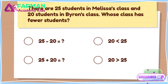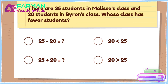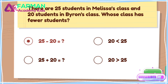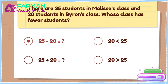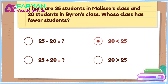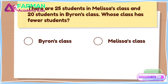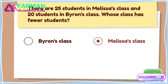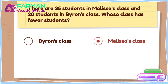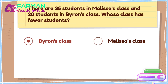Which one matches the word problem? We are comparing the number of students in each class. Make sure to pick an answer with a greater than or less than sign. Yes! 20 is less than 25, which reflects the word problem. In the last question, we figured out that 20 is less than 25. Whose class has 20 students? 20 is less than 25. Byron's class has fewer students.